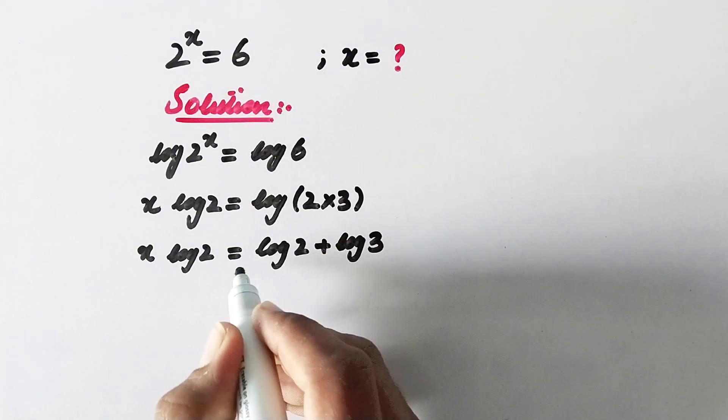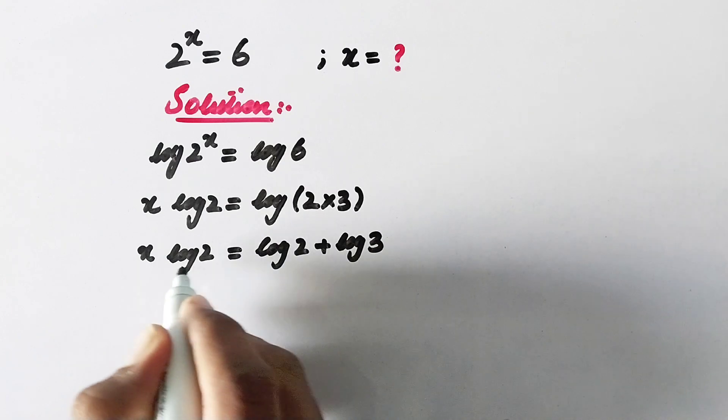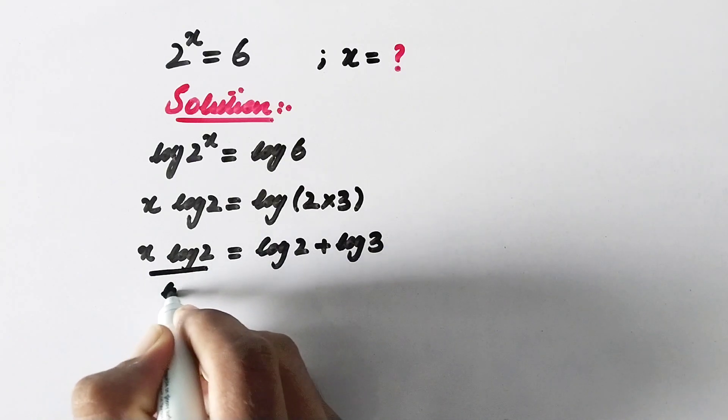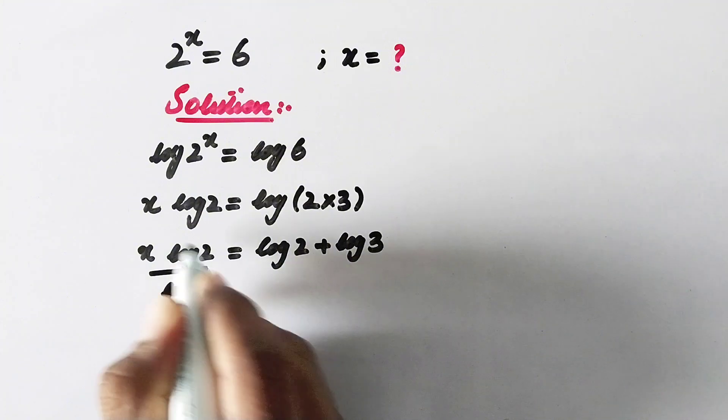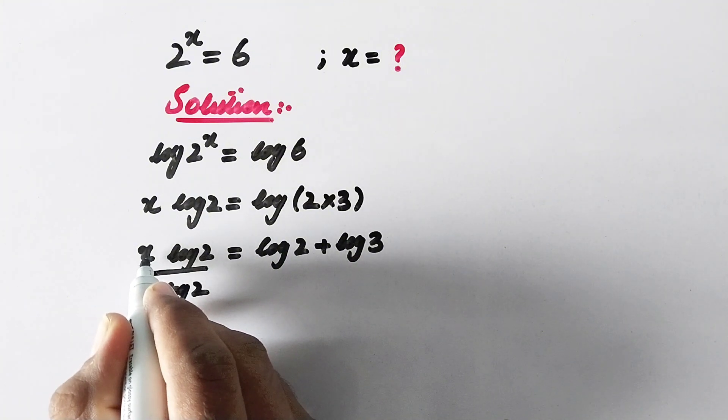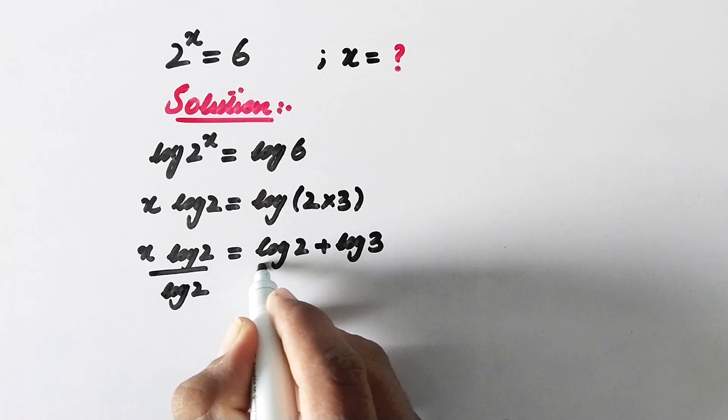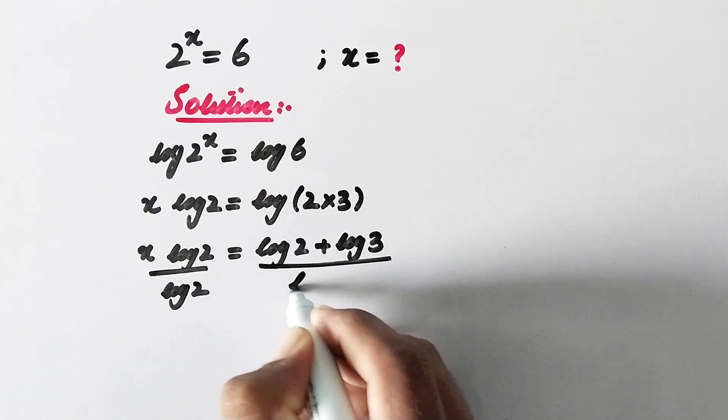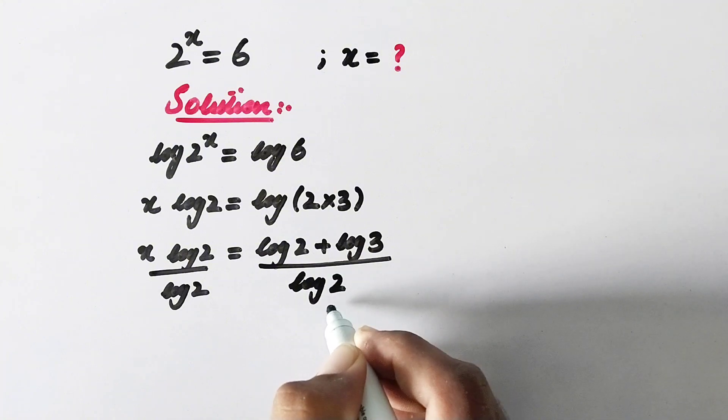And now what we will do next is we will divide both sides by log of 2 to eliminate this log of 2, as we have to find the value of x. So we will also divide the right hand side by log of 2.